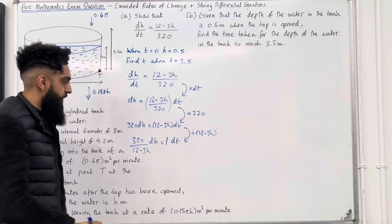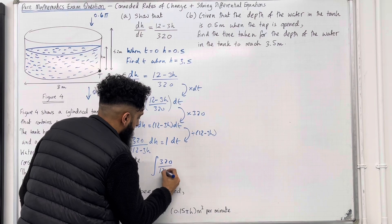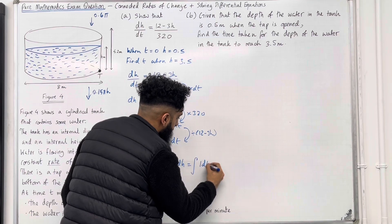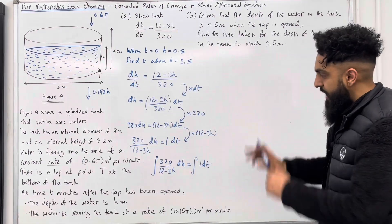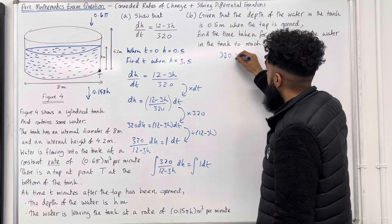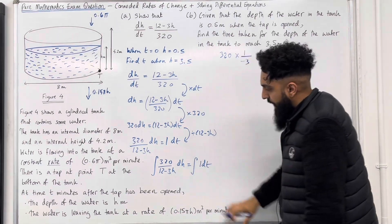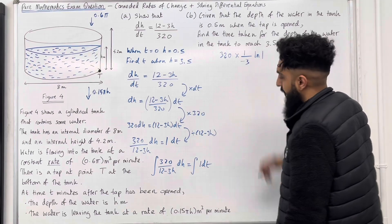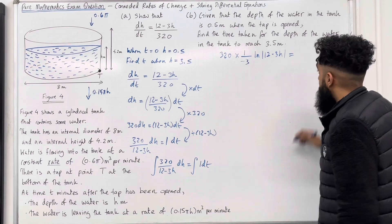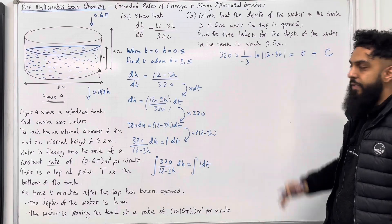The next step is to integrate both sides: ∫ 320/(12 − 3h) dh = ∫ 1 dt. The left-hand side integrates to 320 × (1/(−3)) × ln|12 − 3h|, giving −(320/3) ln|12 − 3h|. The right-hand side integrates to t plus the constant of integration C. Keep the constant on the right-hand side for simplicity.